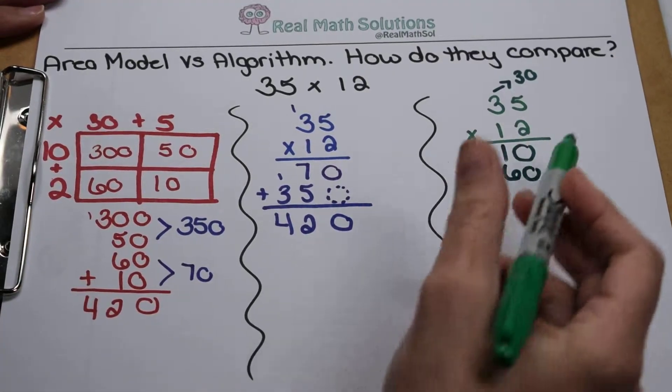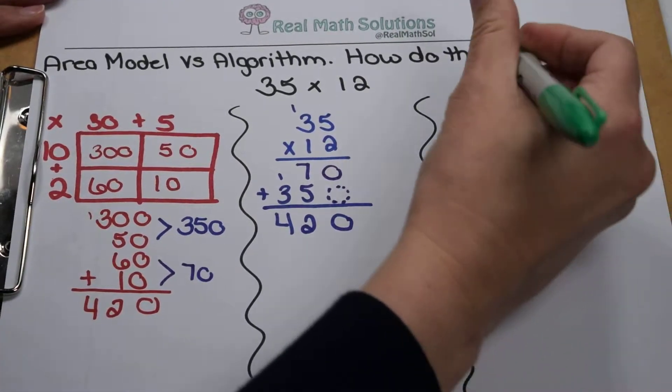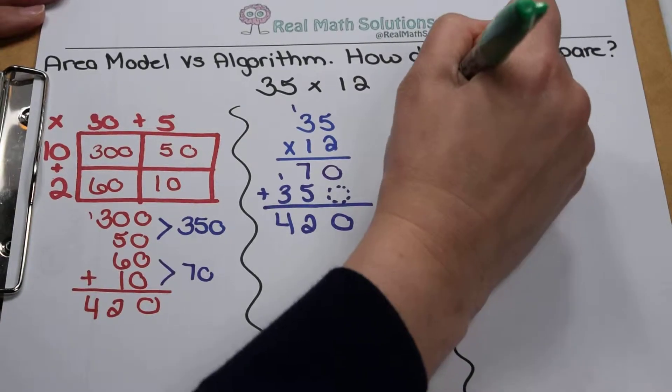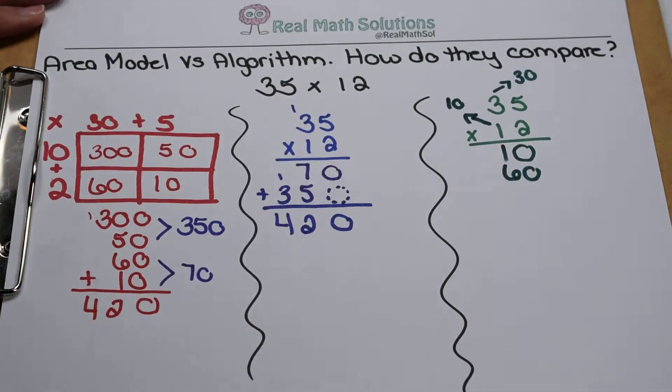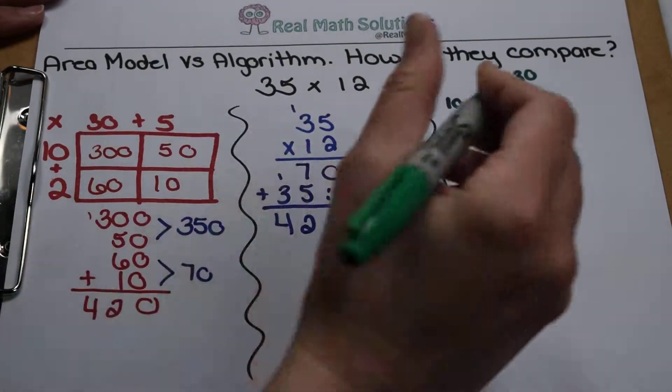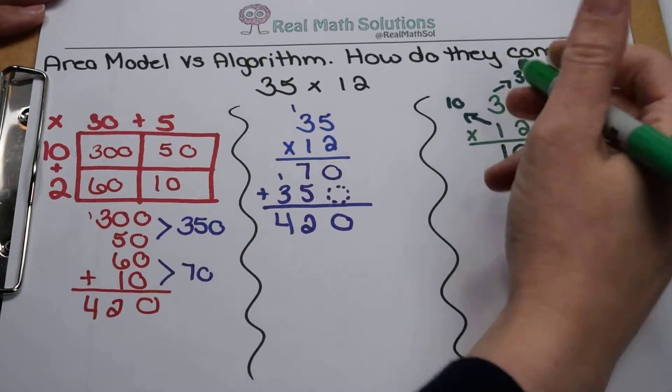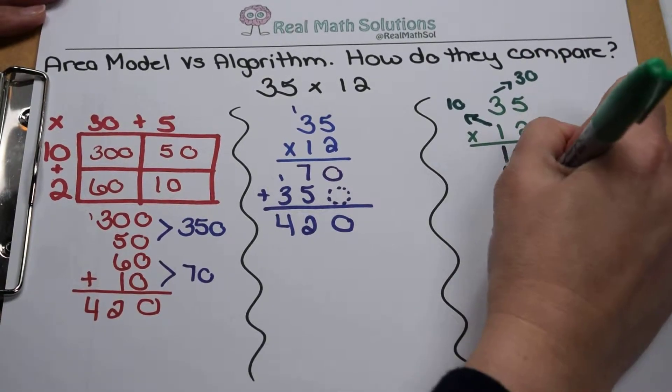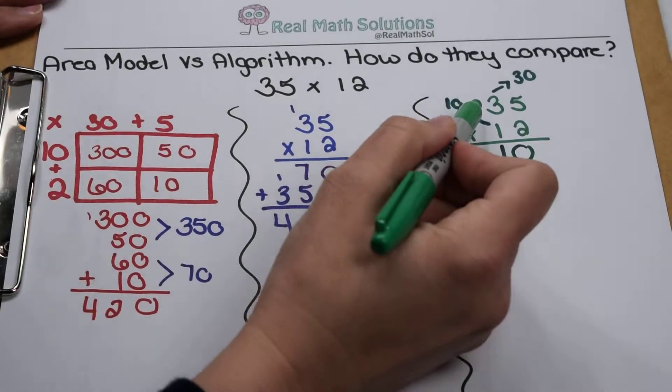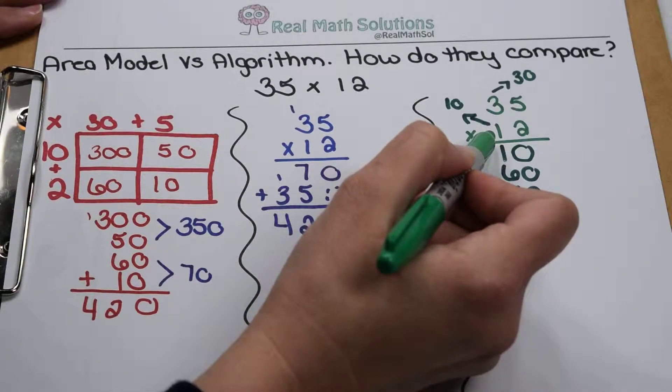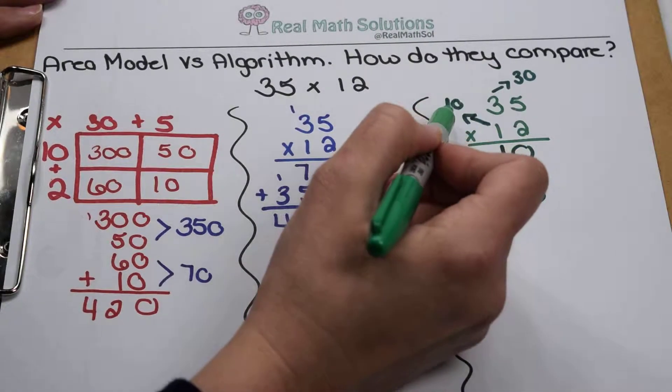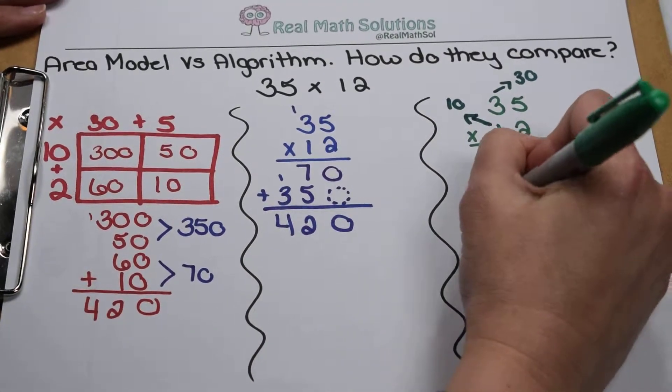Now we multiply 5 times 1, but again, remember that's in the tens place, so that 1 is really 10. We multiply 5 times 10, there's my 50. When I multiply this 3 times 1, I'm really multiplying 30 by 10. There's my 300.